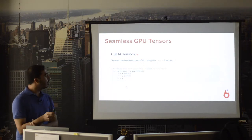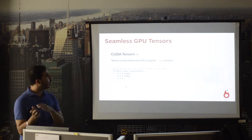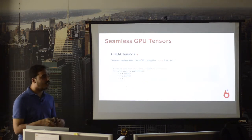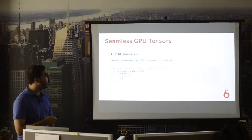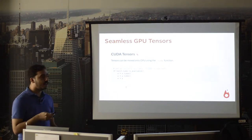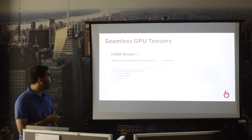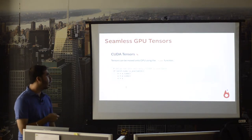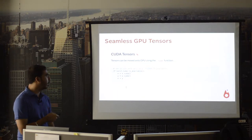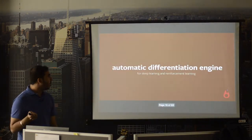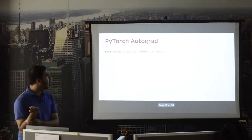Torch tensors can reside on both CPUs and GPUs. To move them to the GPU and harness its power, you need to use .cuda(). Everything that has to be transferred to the GPU for faster computation needs to have .cuda() called on it. You can check if GPU hardware is available using torch.cuda.is_available(), which returns true or false.